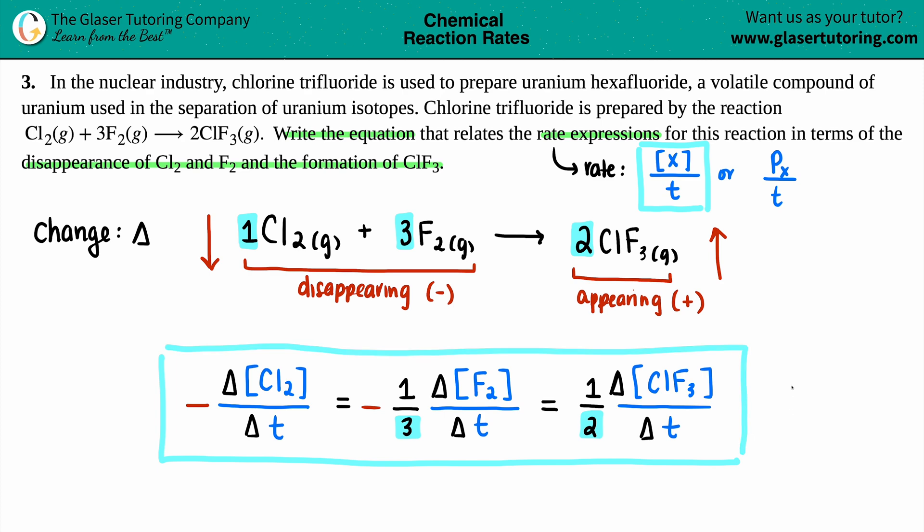So just take it step by step. Keep in mind, you got to put those deltas in there. It's always going to be, nine times out of ten, molarity over time. Put those fractions in there going by the coefficients and don't forget those negatives and the positives.